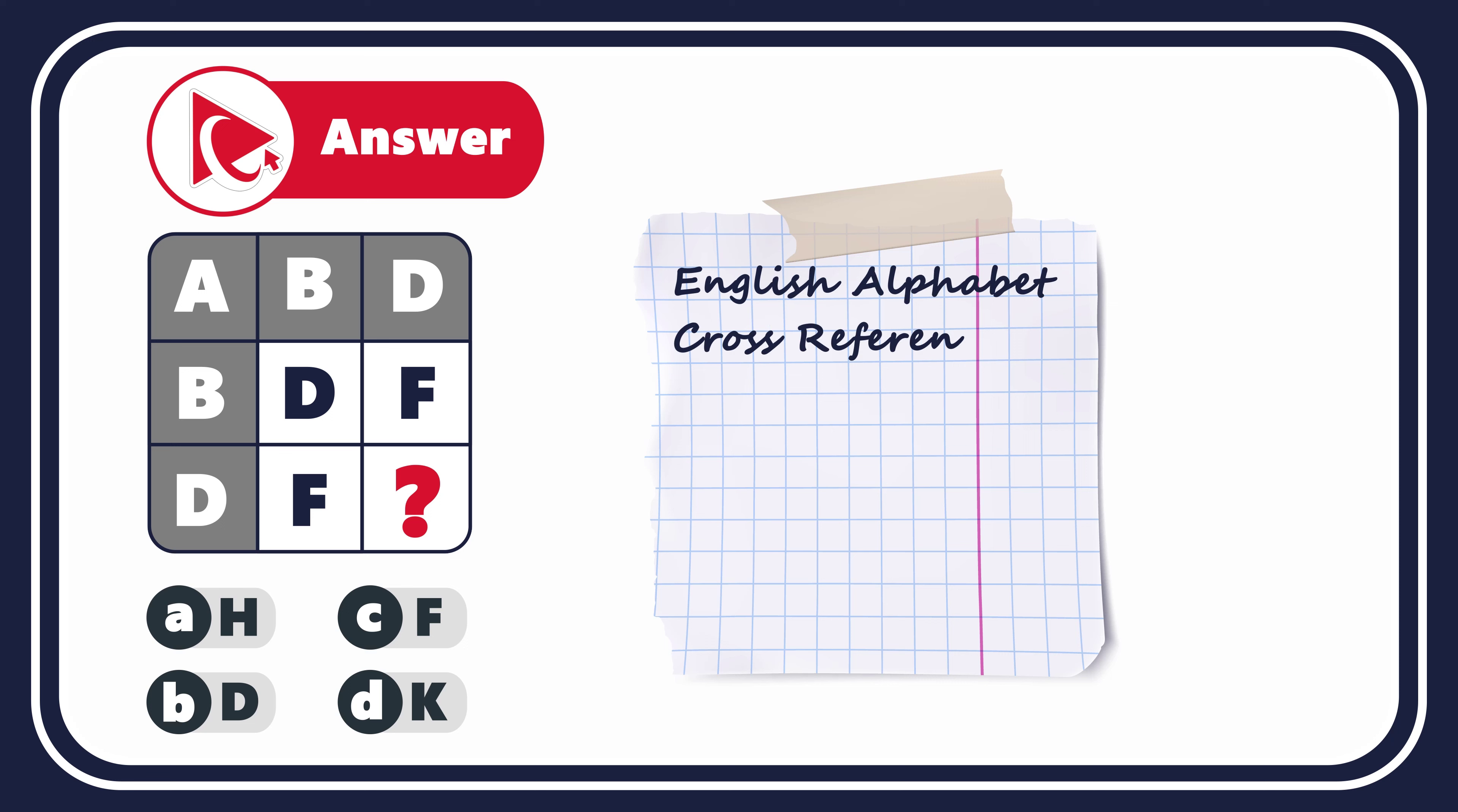To answer this question correctly, let's look at our matrix from a little different dimension. Each letter here corresponds to a specific place in the alphabet, which can be represented by a number. For example, letter A equals 1, letter B 2, C 3, and so on. If we follow this logic, we can replace all letters in all three rows with numbers.